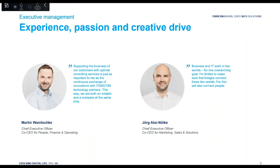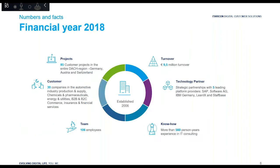Our CEOs are Martin Manitschke and Jörg Arteinolke, whereas Jörg Arteinolke is more the head in the area of Business IT Management. Some facts about the company: in 2018, we completed 85 customer projects, mainly in the DACH region — Germany, Austria, and Switzerland — with a turnover of 9.95 million euros. We have 30 customers in different areas, around 106 employees. Our technology partners are SAP, Software AG, and of course LinaX. In total, we have more than 560 person-years of experience in IT consulting.